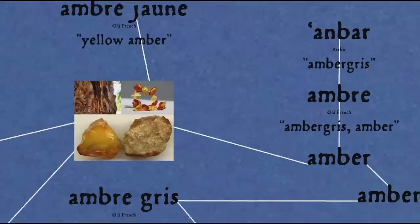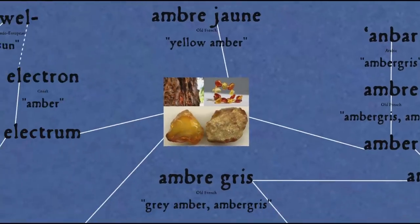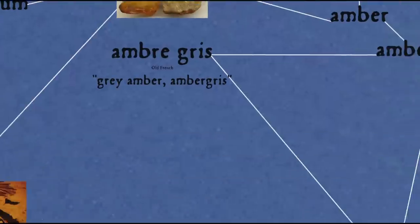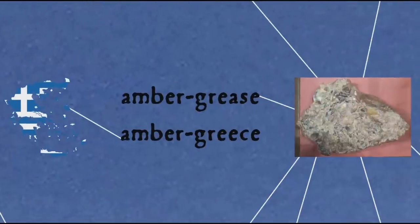To sort out the confusion, the French began to refer to the whale substance as 'ambre gris' (grey amber) and the tree resin as 'ambre jaune' (yellow amber). Eventually, the tree resin continued to be called amber, having usurped the word. To make matters more confusing, by way of folk etymology, the word ambergris came to be interpreted as either 'amber grease' because of the greasy nature of the substance, or 'amber Greece' in the belief that it came from the country Greece.